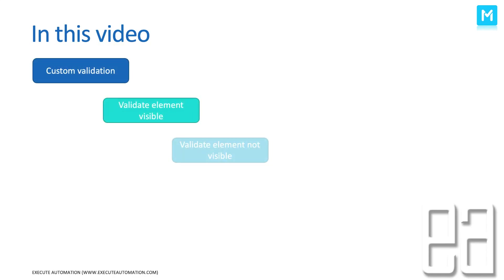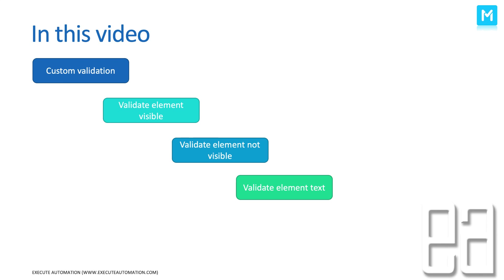In this video I'll be talking about custom validations, validate element visible, validate element not visible, and validate element text. These are some of the most common things we'll be doing within any automation testing tool — whether it's Selenium, Cypress, Test Project, Katalon Studio, or whatever. These are the most common steps for validating a particular element within the UI of our applications. One of the powerful features available within Testim that differentiates itself from other testing tools — at least on the AI side — is custom validations.